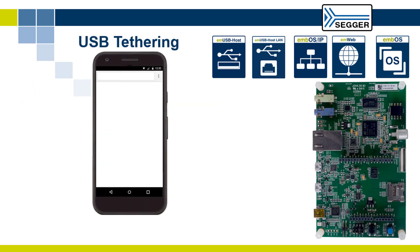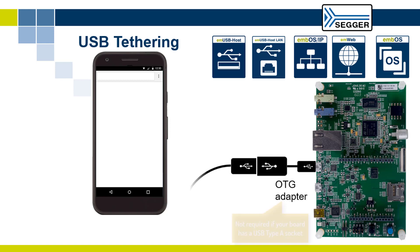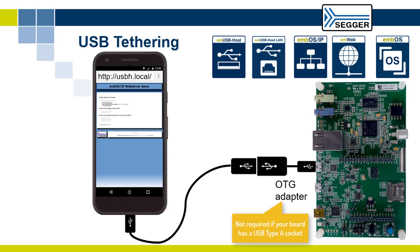Interestingly, instead of a USB to Ethernet adapter, you can also use an Android smartphone with USB tethering enabled in the settings, to access the embedded web server via the phone's web browser. This functionality enables a whole new set of use cases.